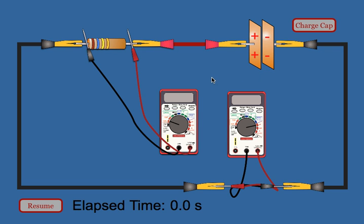When you're all finished collecting your data, create a graph where voltage is on the y-axis and time is on the x-axis. Do this for all the data sets that you collected. Then plot another graph where current is on the y-axis and time is on the x-axis, again for all the data sets that you collected.